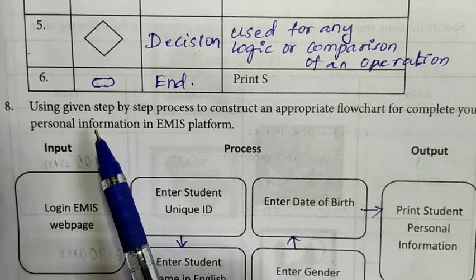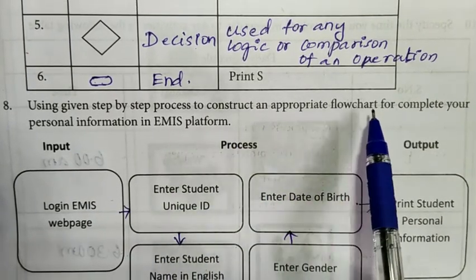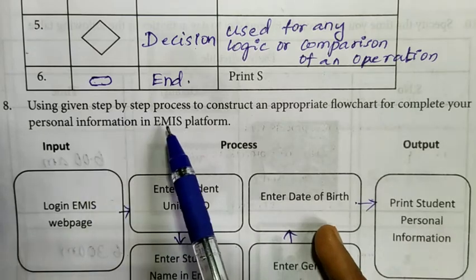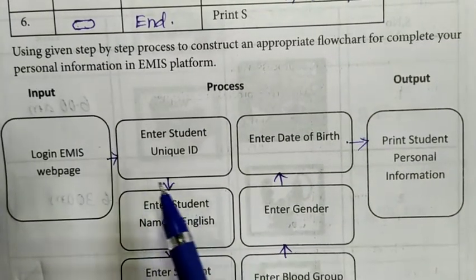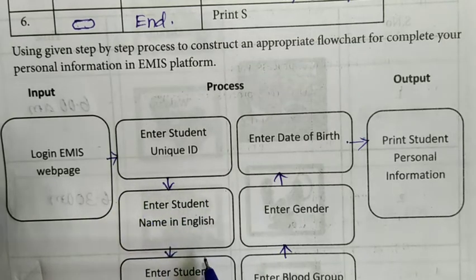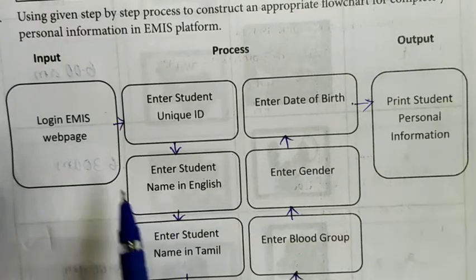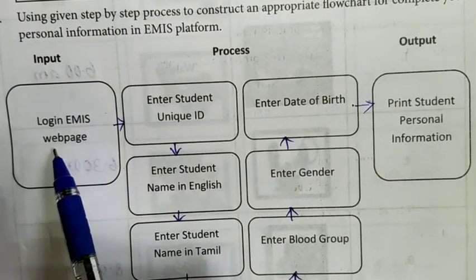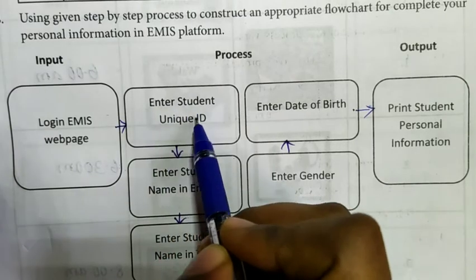Eighth question: Using given step-by-step process to construct an appropriate flowchart for completing your personal information in EMIS platform. So there is a flowchart. First input, login EMIS web page. That is first process. Then second is enter student Unique ID.